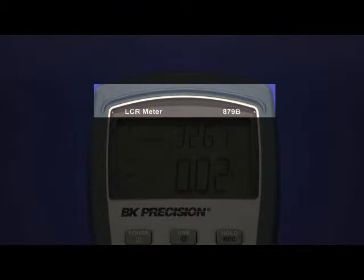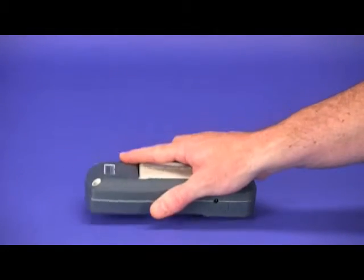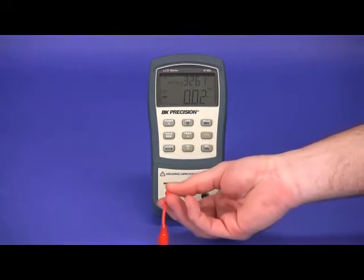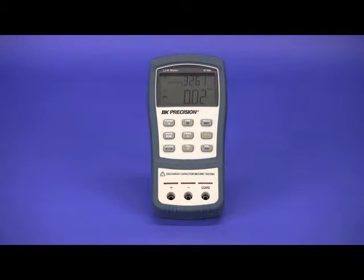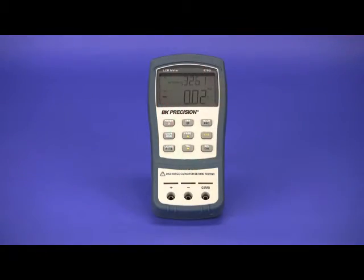Also included is the LCD visor to reduce the risk of the display being scuffed or scratched when placed face down. The input jacks include both banana for use with short test leads and blade style jacks that allow the direct insertion of leaded components.